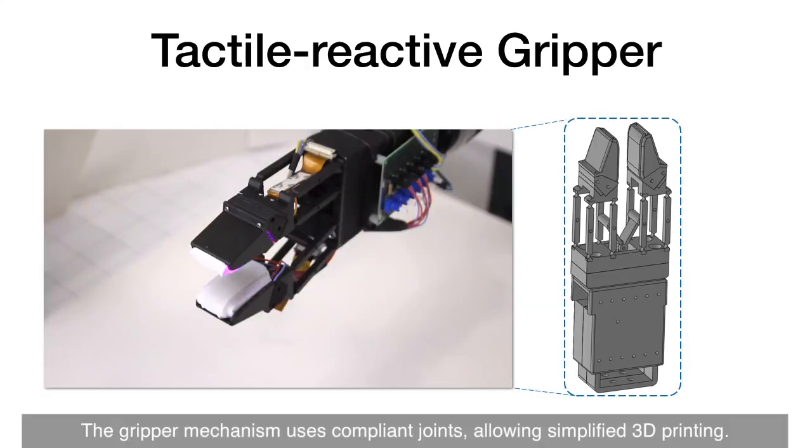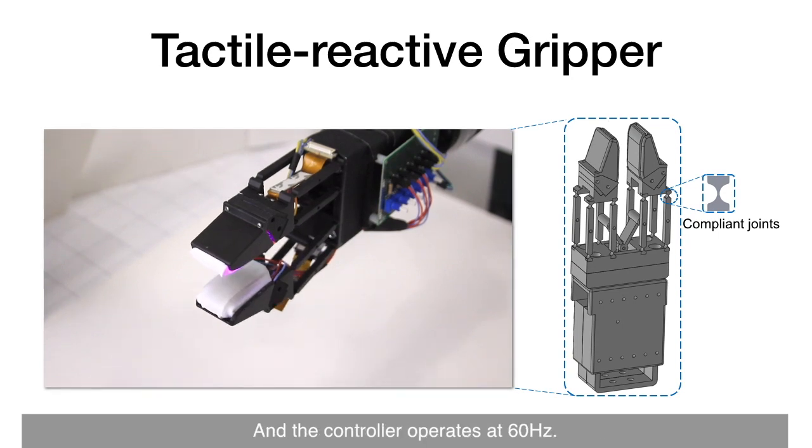The gripper mechanism uses compliant joint allowing simplified 3D printing, and the controller operates at 60 Hz.